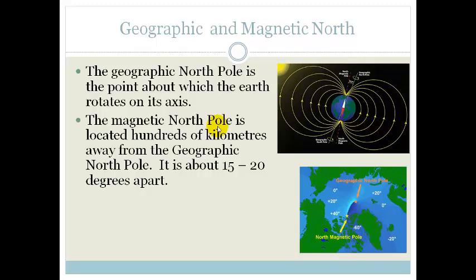in other words, the north pole that the compass points to, is actually hundreds of kilometers away from the geographic north pole. It's about 15 to 20 degrees apart.